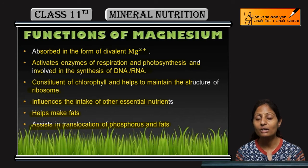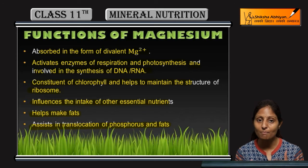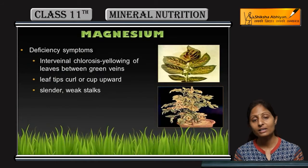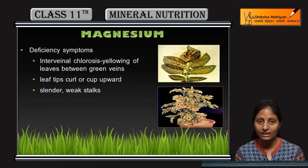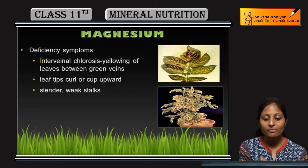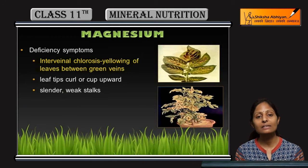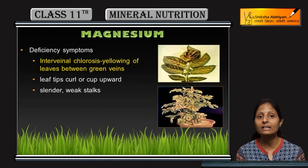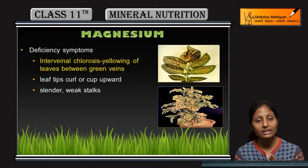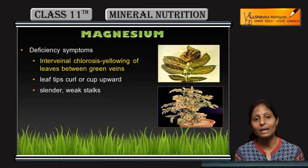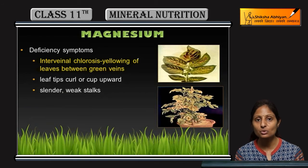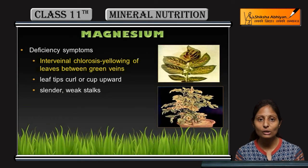These are the different functions performed by magnesium. If there is a magnesium deficiency, what can you see in a plant? You will observe interveinal chlorosis — the yellowing of leaves between the green veins. The thread-like veins supply different nutrients in the plant, and in the absence of magnesium, the areas between the veins turn yellowish in color.